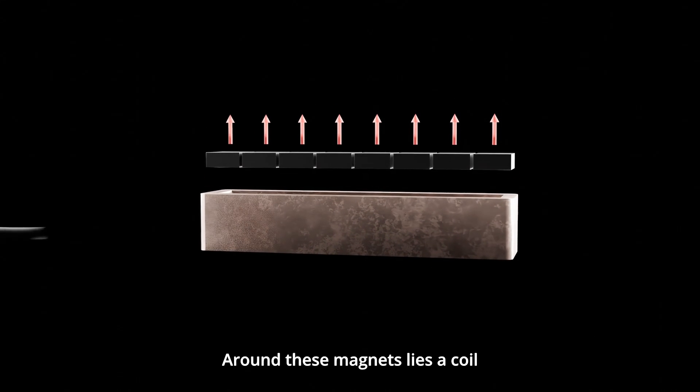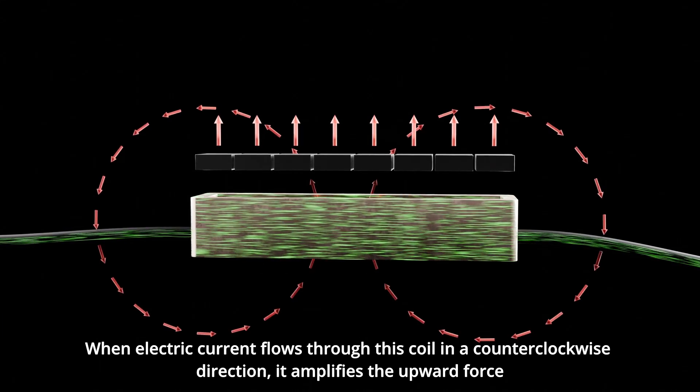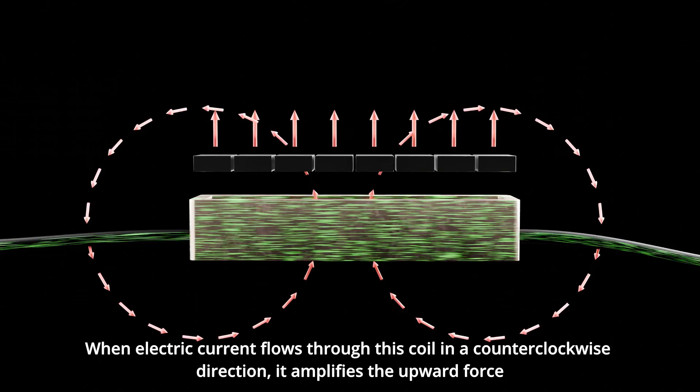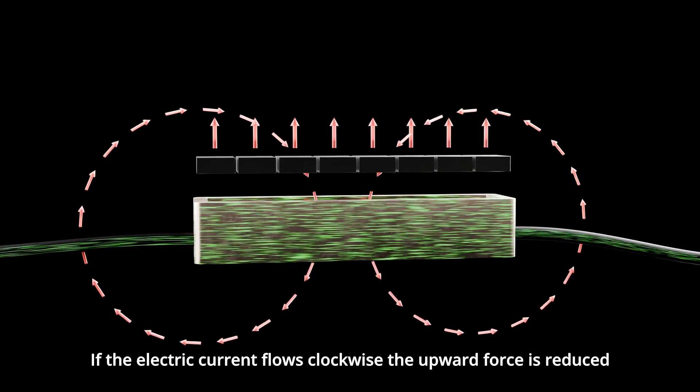Around these magnets lies a coil. When electric current flows through this coil in a counterclockwise direction, it amplifies the upward force. If electric current flows clockwise, the upward force is reduced.